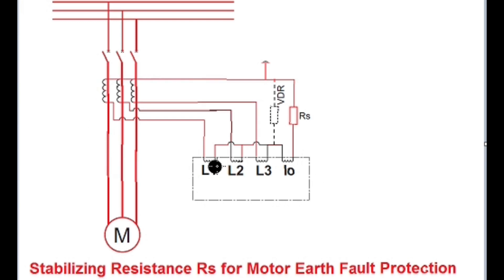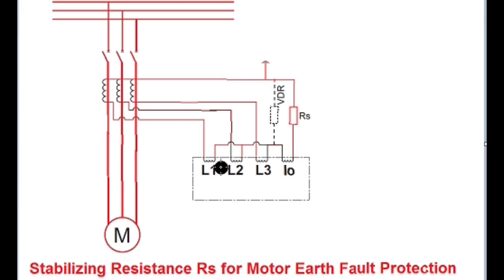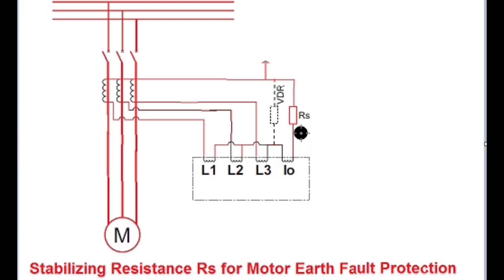Here the connection has been shown: from each phase CT secondary, one terminal is taken to the red, yellow, and blue phase coil of the relay, and the other terminal is shorted to form the neutral and taken through the residual coil or earth fault coil of the relay, then back to the CT via a resistance called the stabilizing resistance.